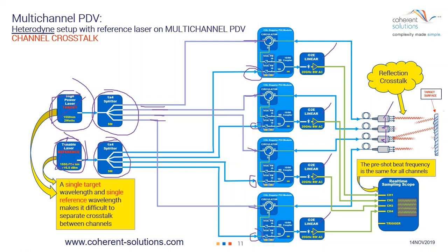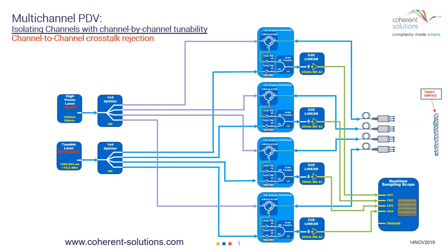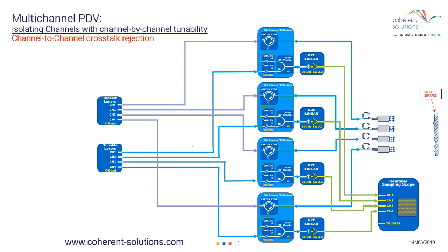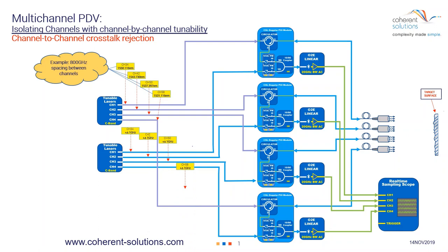I'm going to show you how to solve that. Instead of having a target laser split four ways, we replace it with four separate tunable lasers, and do the same for the reference laser. We set these at their respective wavelengths: 1,550.116 nanometers, 1,543.730 nanometers, and so on. I chose these particular wavelengths because they correspond to the ITU grids spaced 100 gigahertz between channels, with a channel spacing of eight channels — 800 gigahertz separation.